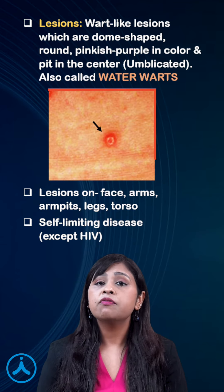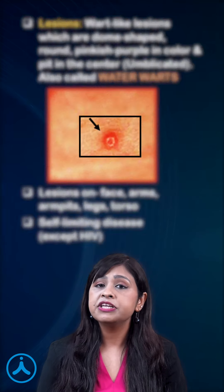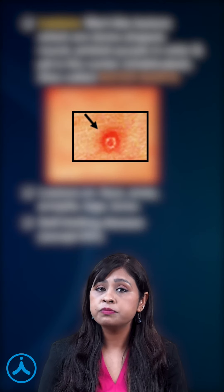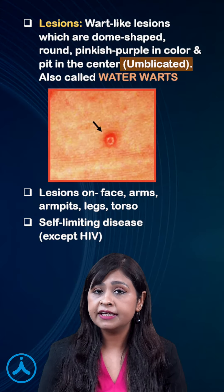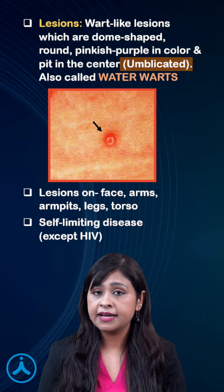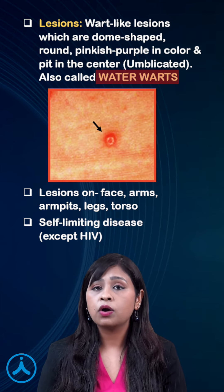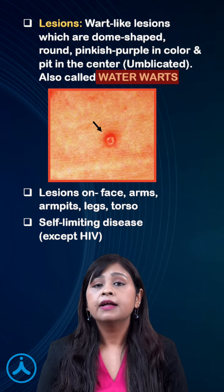The lesions are wart-like, purplish-pinkish, dome-shaped, umbilicated or pit-centered. It is also known as water warts.